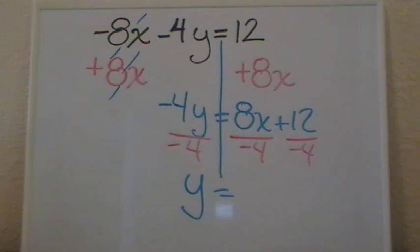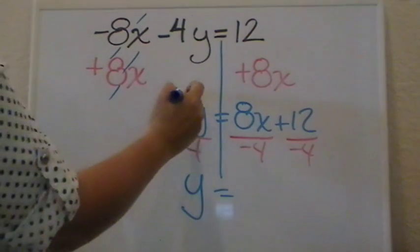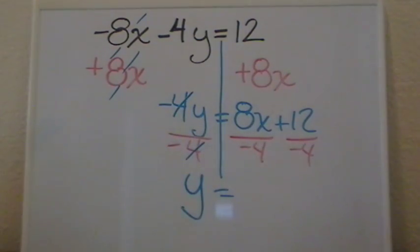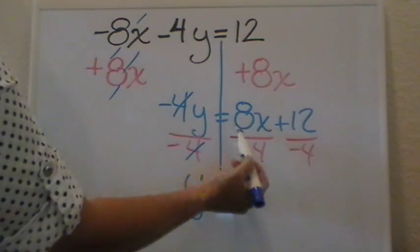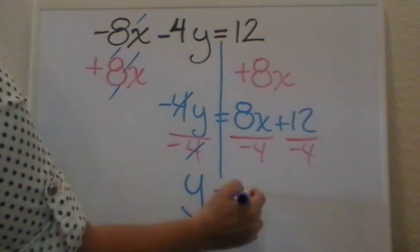After we do that, now we know that our 4's are going to be cancelled on this side, and on this side all that we have is pretty much division. Now don't forget your signs. Positive divided by a negative, negative.